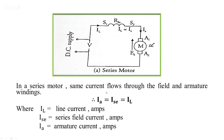In a series motor, the same current flows through both the field and armature windings. This is the line current — the same current flows through the field and through the armature. Therefore IA = ISC = IL, where IL is the line current, ISC is the series field current, and IA is the armature current — all in amps. So all three currents are equal in a series motor.